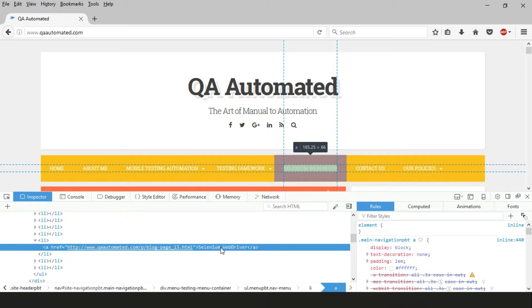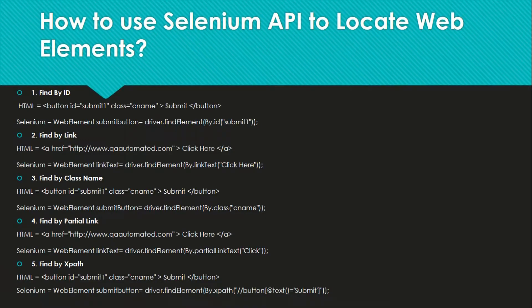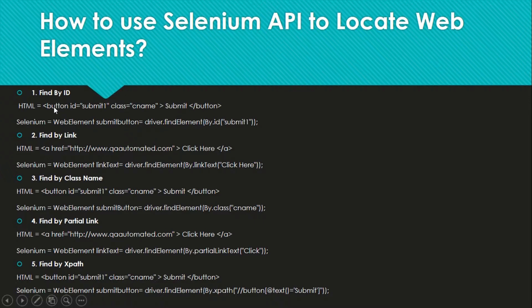Now let's look at an example of HTML code. This code is for a button — 'button' is the HTML tag here, and it has different attributes. Every HTML element will be in this format: it will have a tag, then it will have some attributes, and it will have a text value as well.